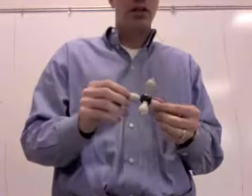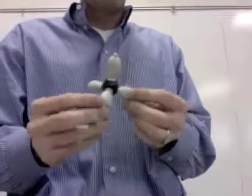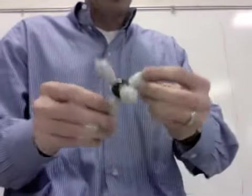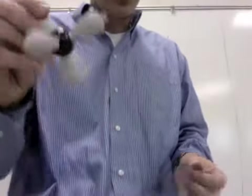So the shape that actually allows four groups to get as far away as possible is this one right here. This is called a tetrahedron.